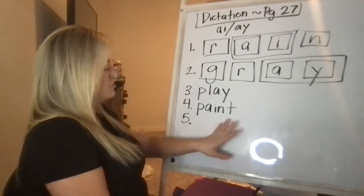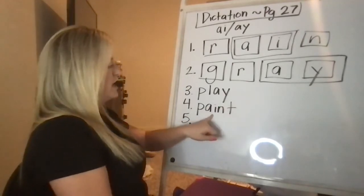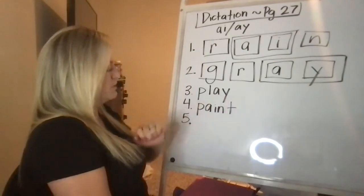So normally when you have that A sound and there's no E on the end, it's going to be the A-I. At the end of the word, it's normally going to be A-Y.